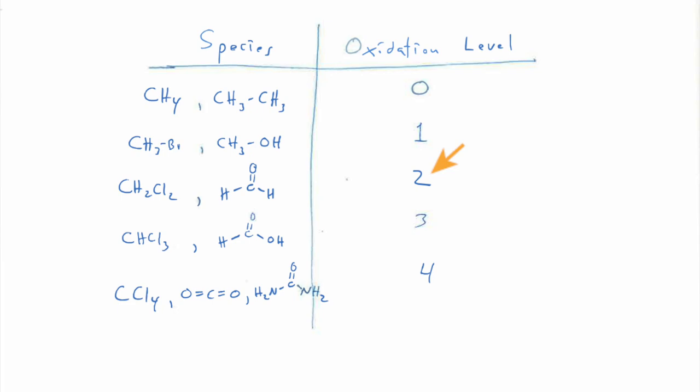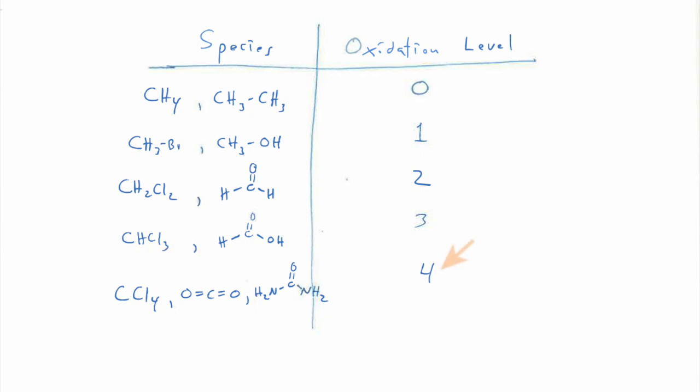Another really common way of encountering carbons in the second oxidation level is in carbonyls — aldehydes and ketones specifically. Here I've got an aldehyde with two bonds to an electronegative atom, so it's in the second oxidation level. Attach three electronegative atoms and you're in the third oxidation level; the most common way to encounter that is in acid derivatives — carboxylic acids, where that carbonyl has three bonds to an electronegative atom, including nitriles. And then we can have a carbon bonded to four electronegative atoms — carbon tetrachloride and carbon dioxide are both in the fourth oxidation level.